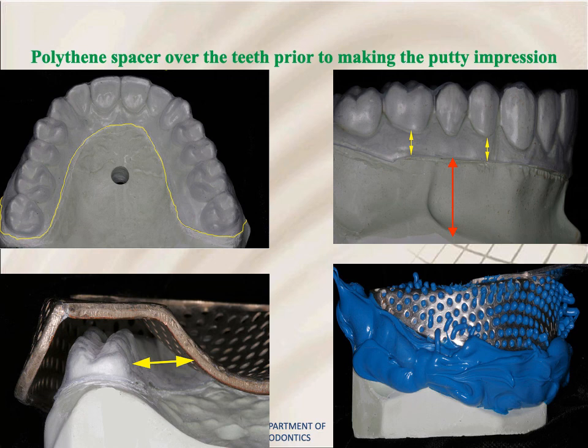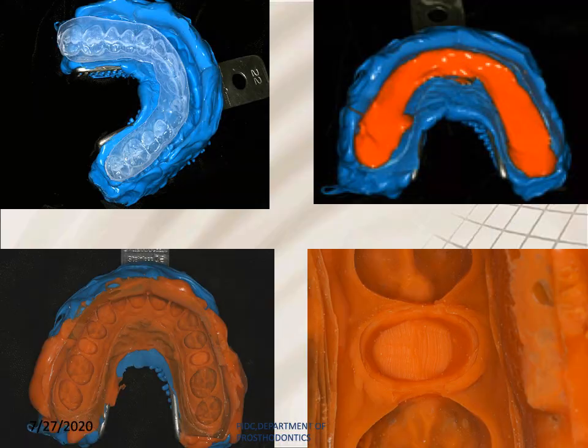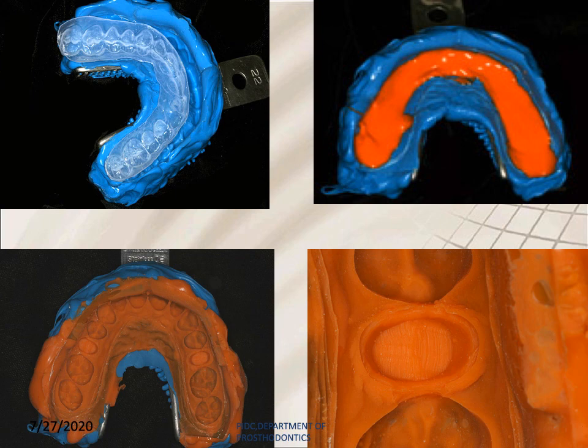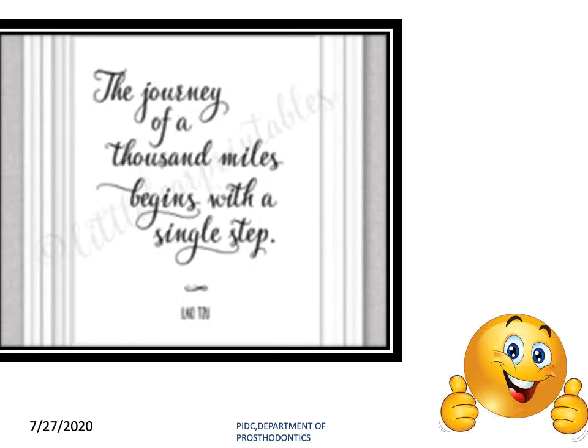The polythene spacer is placed over the teeth prior to making the putty impression. This spacer is then removed and replaced by the light body impression material, which is placed inside the patient's mouth. The material is allowed to set and then the impression is removed after complete set of the light body impression material.